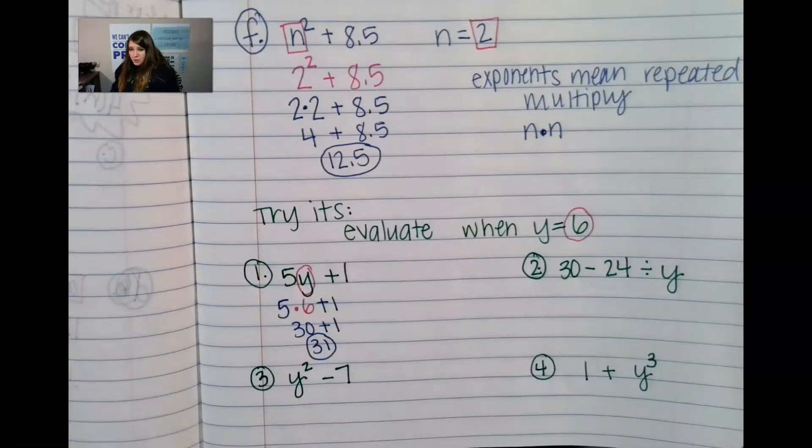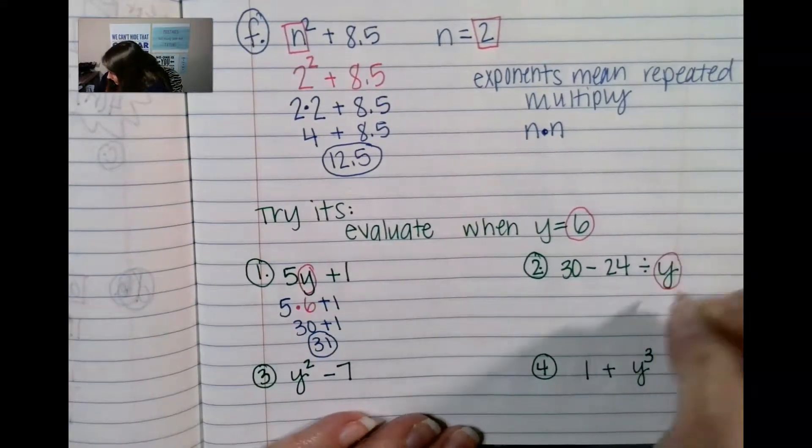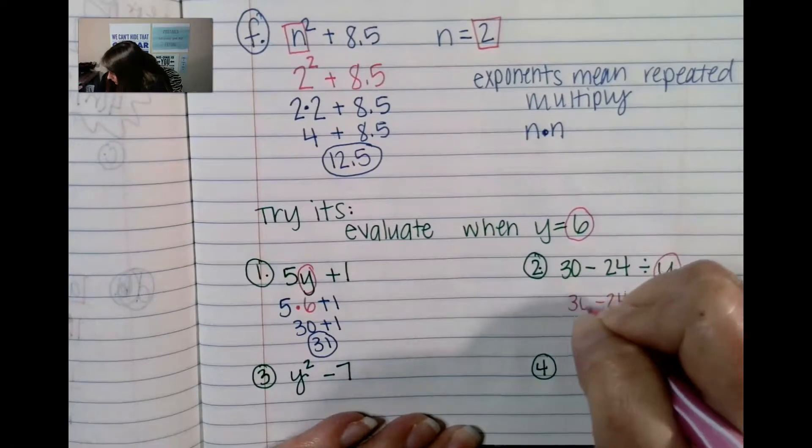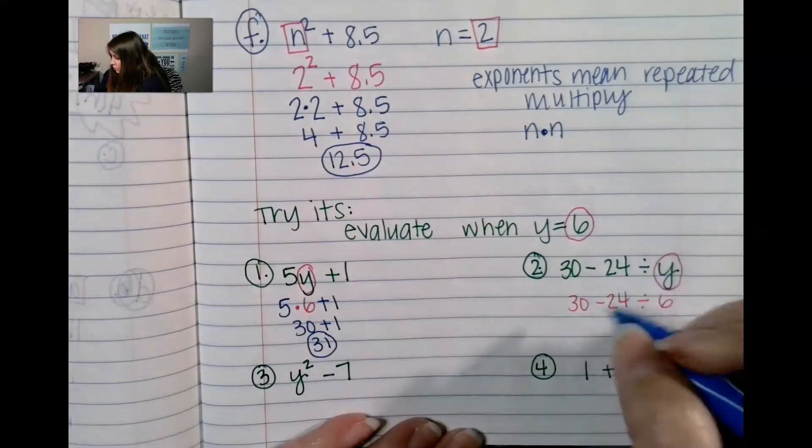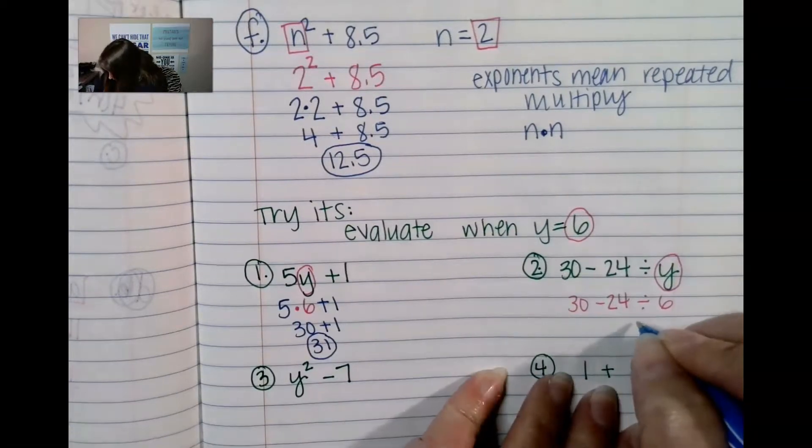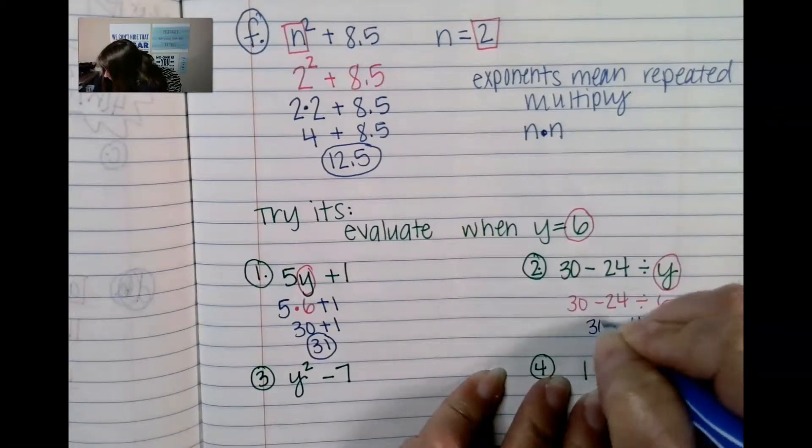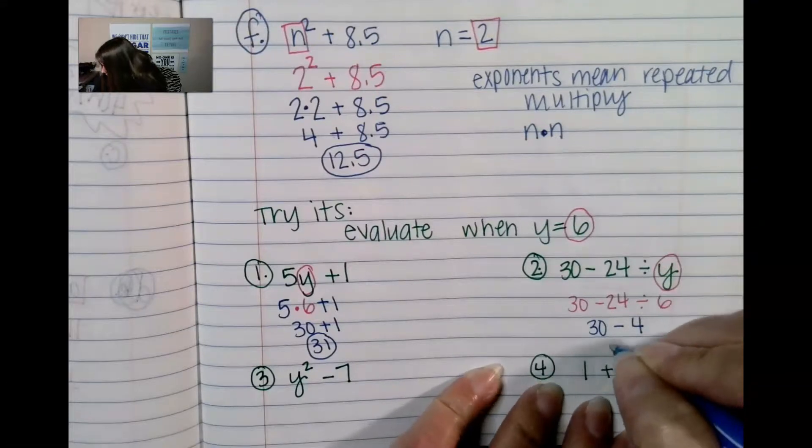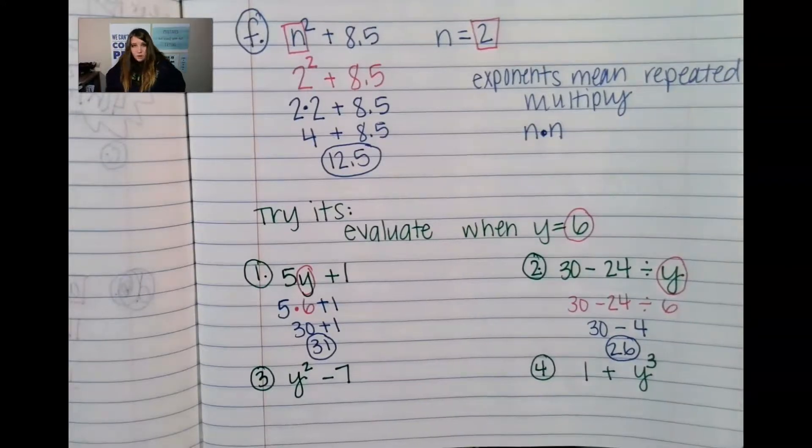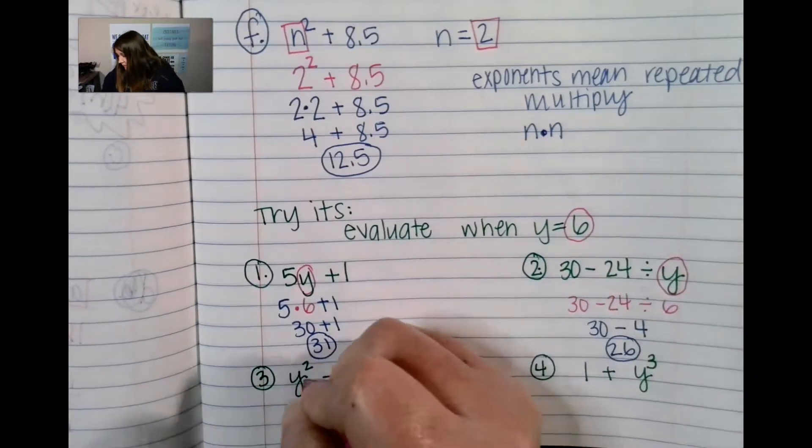Try-it number two says y equals again equals six so I'm just going to drop down the rest of this problem and 24 divided by 6, 24 divided by 6 is 4 minus 30, 30 minus 4 is 26. All right you guys.